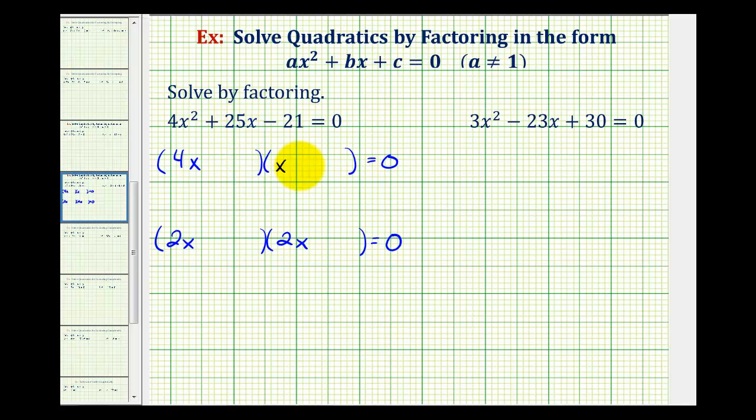Now the second terms of the binomial factors must come from the factors of negative 21 so that the sum of the inner product and outer product is equal to positive 25x.